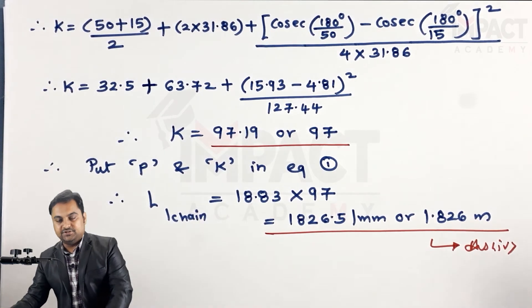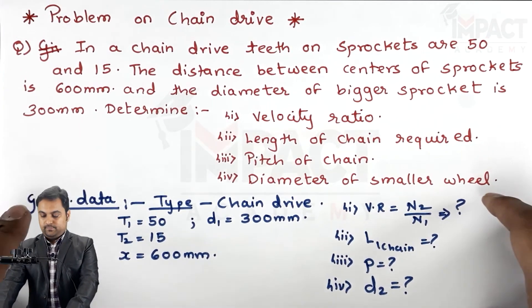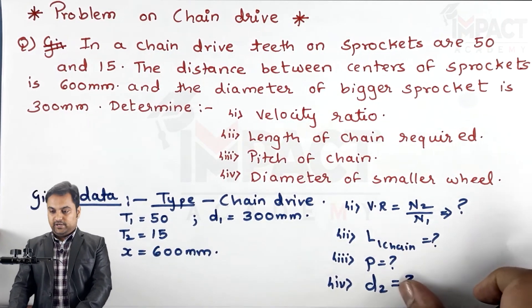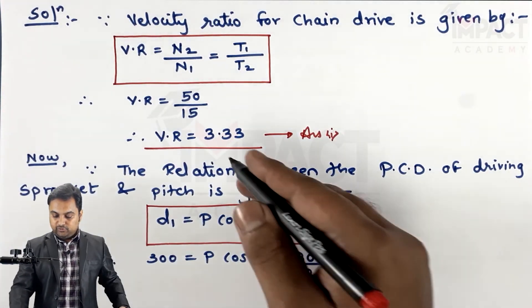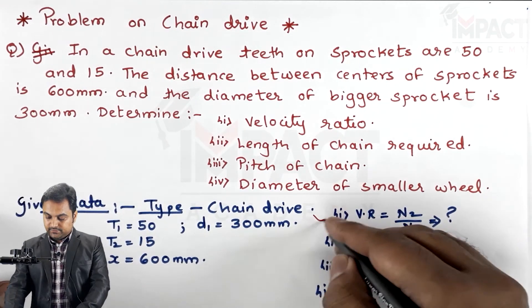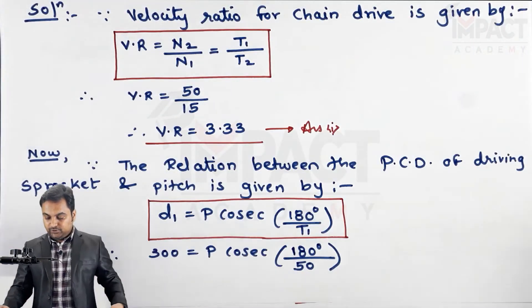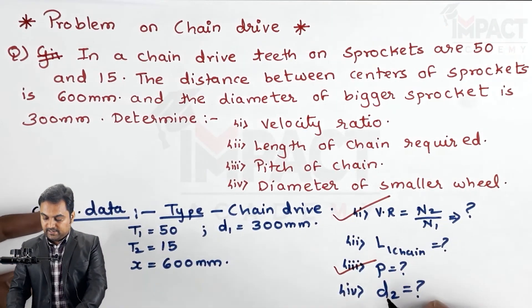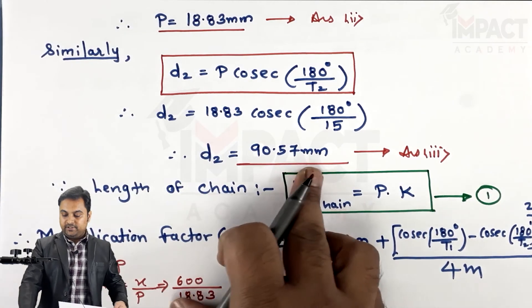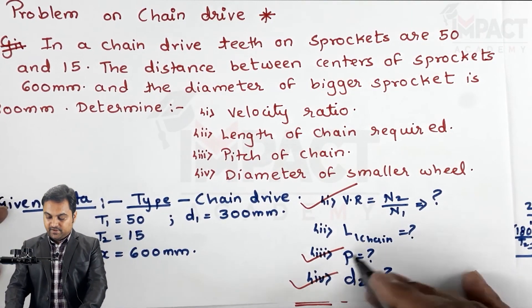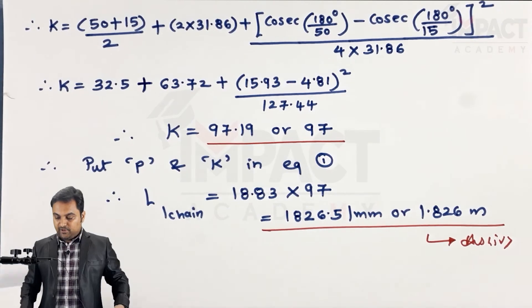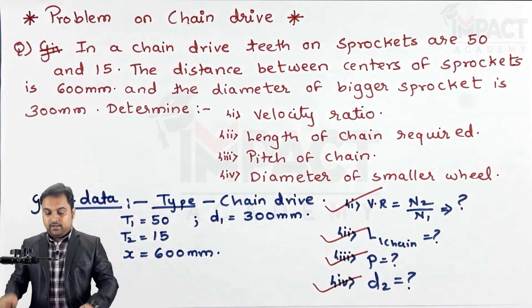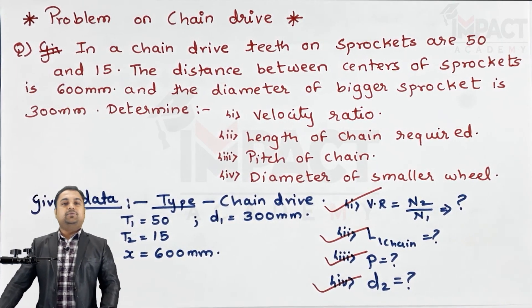To summarize all answers: velocity ratio = 3.33; pitch = 18.83 mm; diameter of driven sprocket d2 = 90.57 mm; and length of chain = 1.826 meters. With this, the problem is complete.